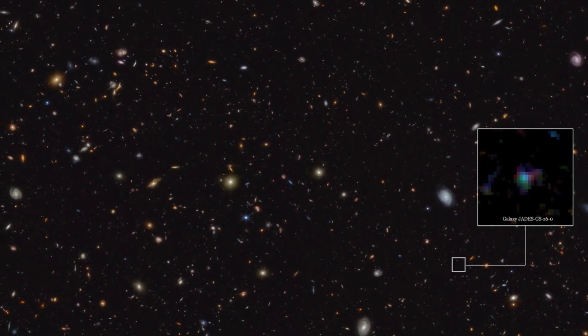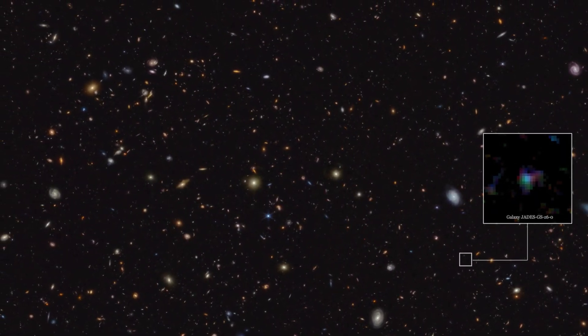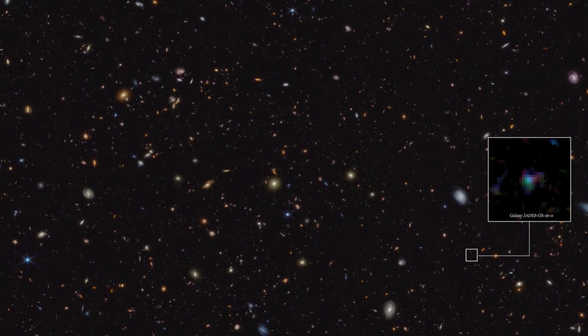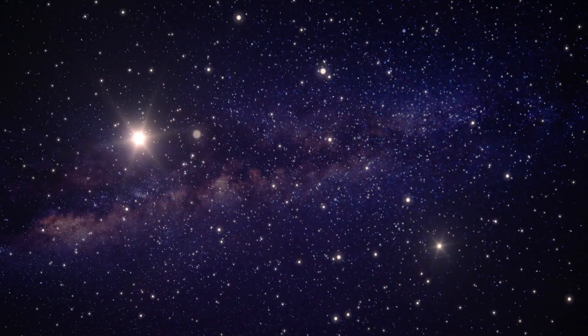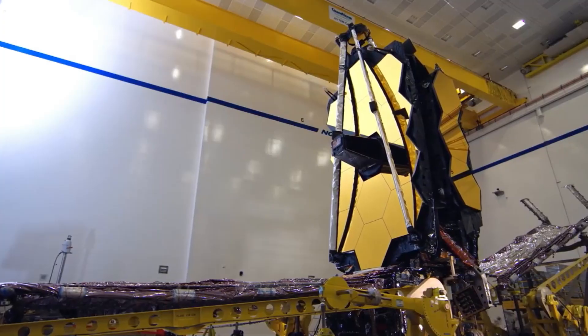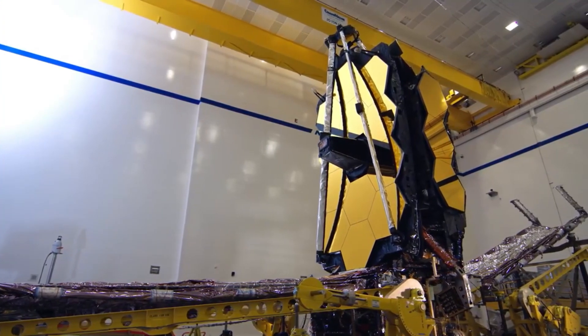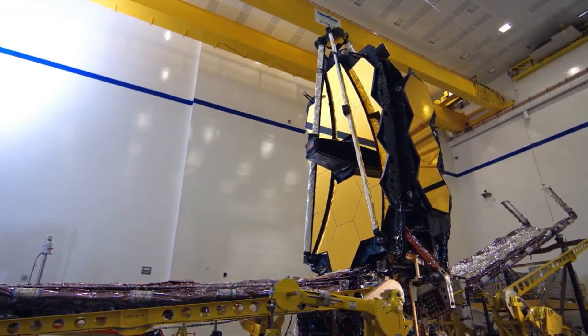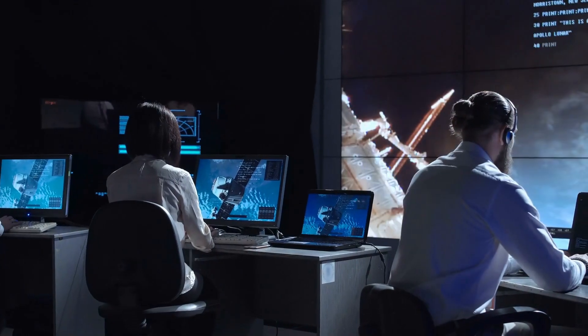This planet is the first definitive carbon-rich planet found outside our solar system. In other words, it's like a giant diamond and ruby floating in space. The James Webb Space Telescope keeps pushing the boundaries of our understanding of the universe, and this discovery is no exception.